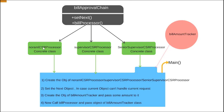I will set who each CSR should pass to if it cannot handle the request. Then I create an object of BillAmountTracker, pass some amount, and call the BillProcessor function passing that BillAmountTracker object. This is how I am going to build the chain of responsibility design pattern program.